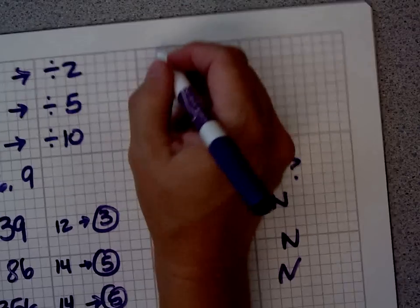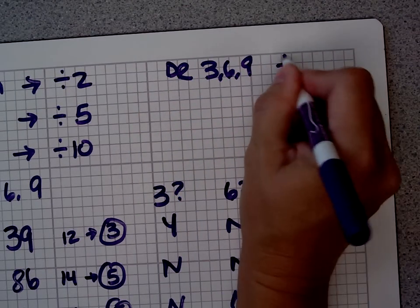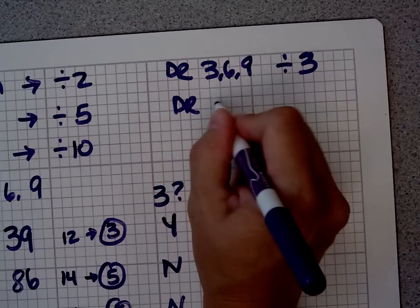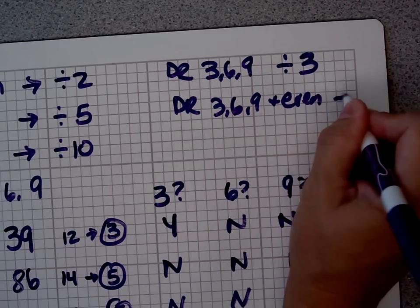Add that to what we already know. Digital root 3, 6, 9, divisible by 3. Digital root 3, 6, 9, and even divisible by 6.